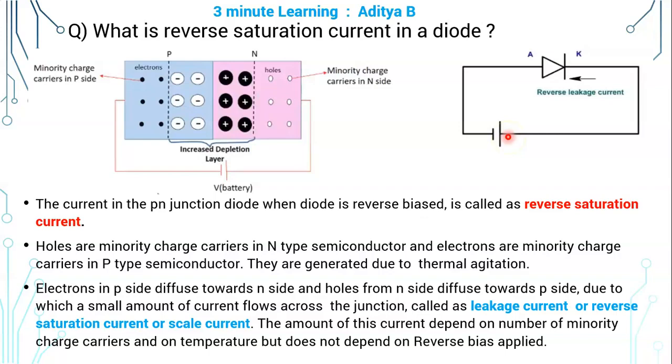During the reverse bias, this small current called reverse saturation current flows from N side to P side, or from cathode to anode of the PN diode.